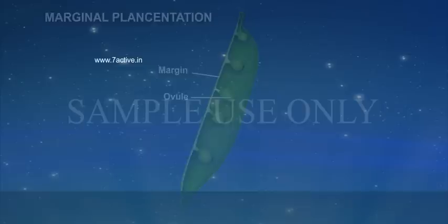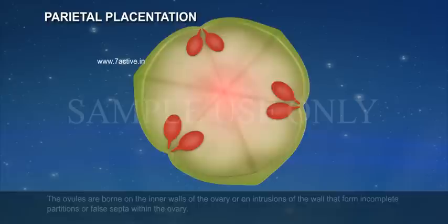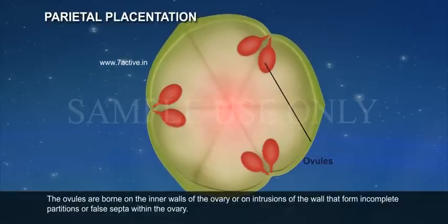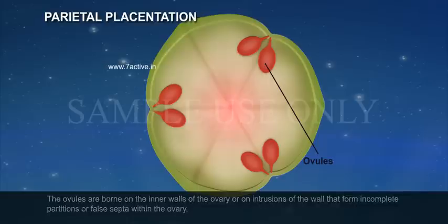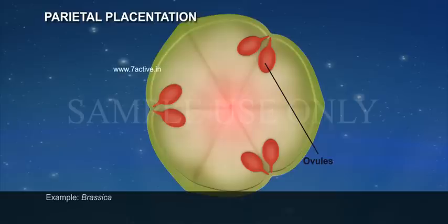Parietal placentation: The ovules are borne on the inner walls of the ovary or on intrusions of the wall that form incomplete partitions or false septa within the ovary. It is also found in unilocular ovary. Examples: Brassica, Cucurbita.